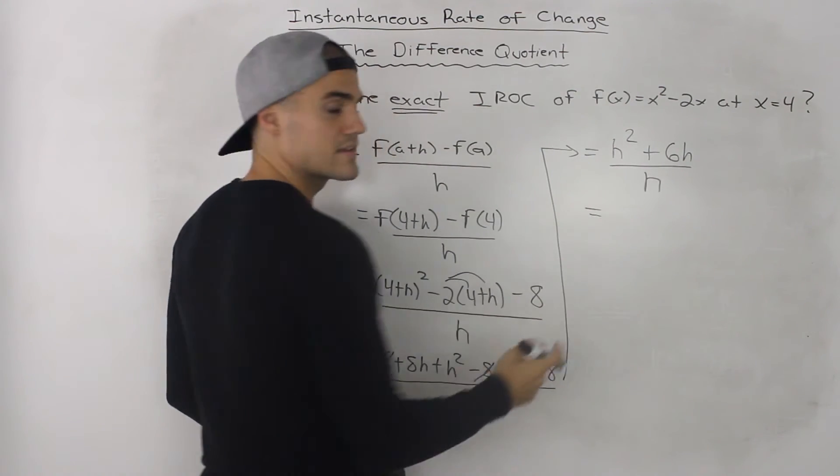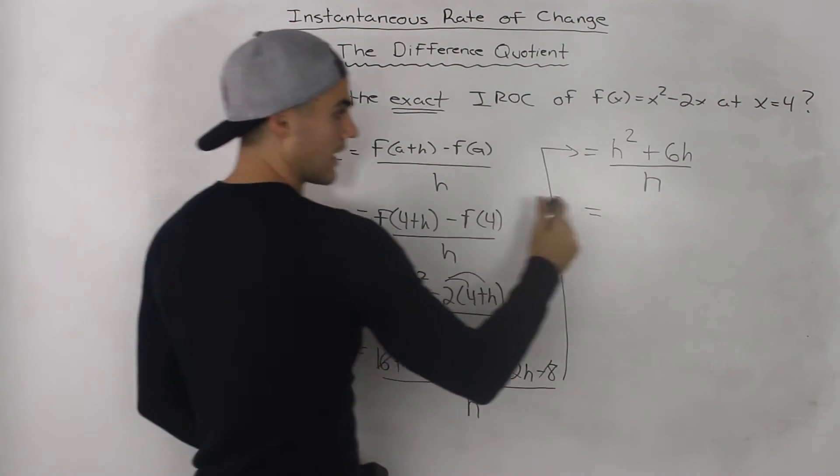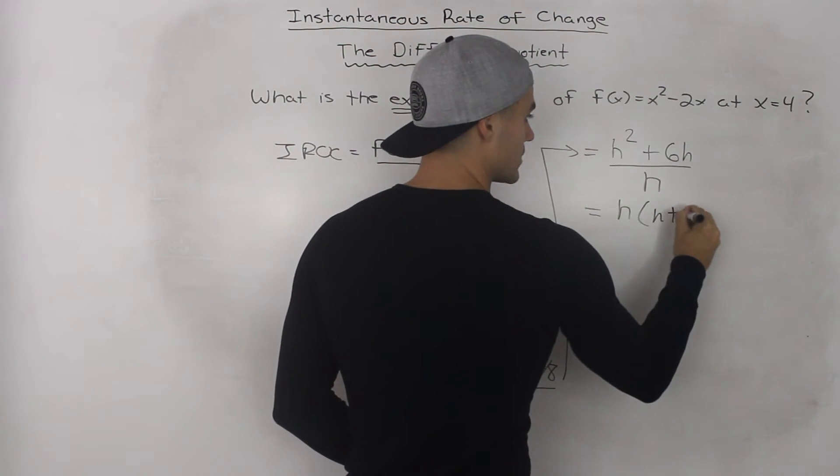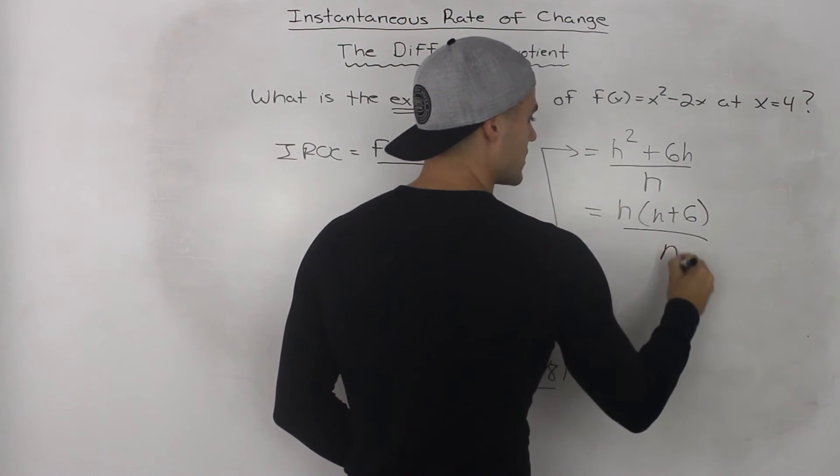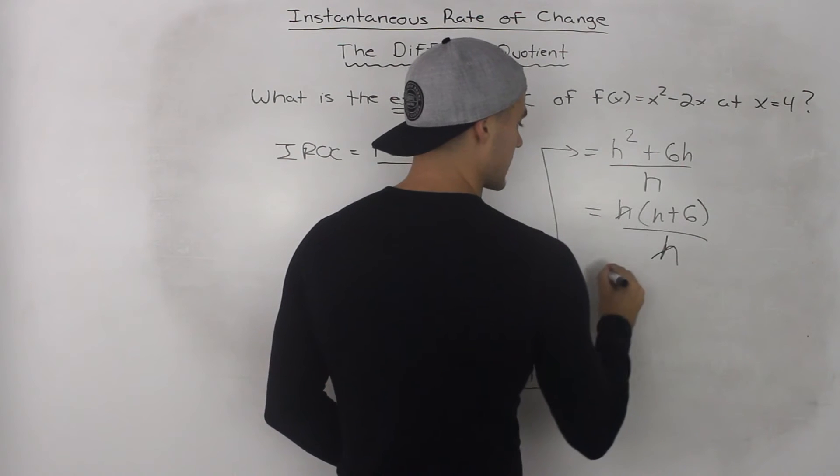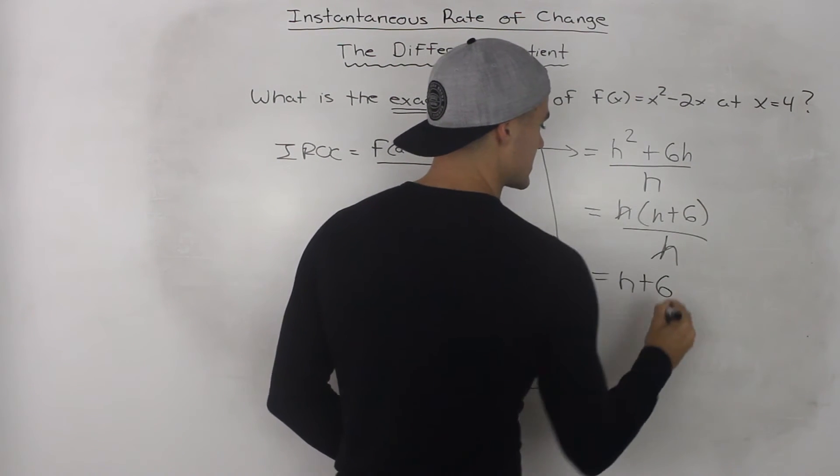And now to simplify this even further, we can factor out an h from the numerator. So we'd have h plus 6 all over h. These h's will cancel out, so we're just left with h plus 6.